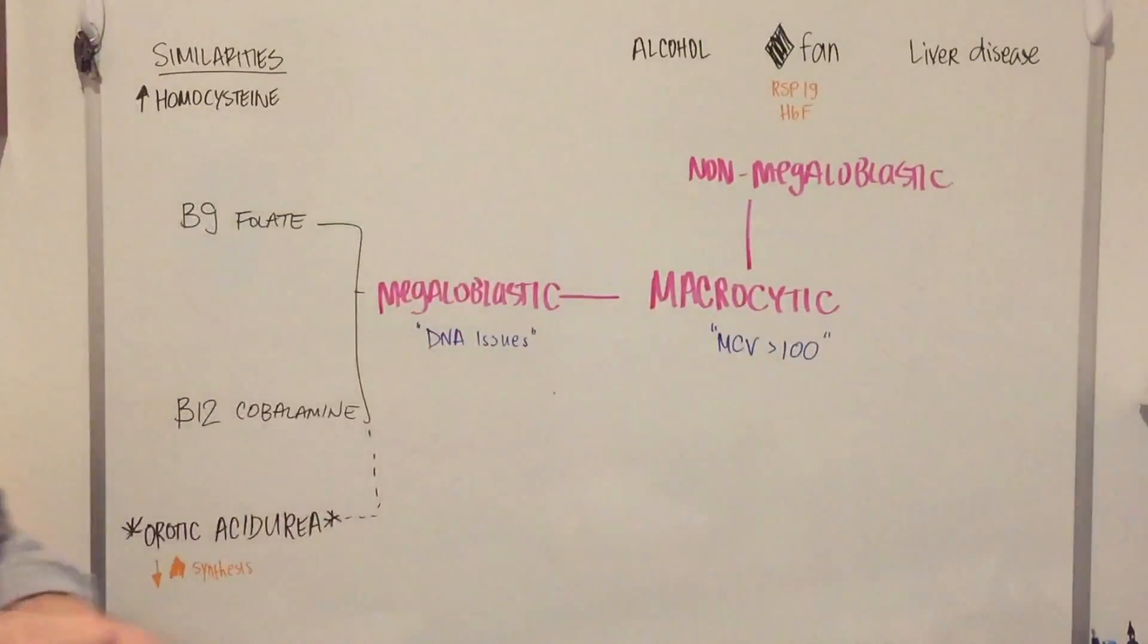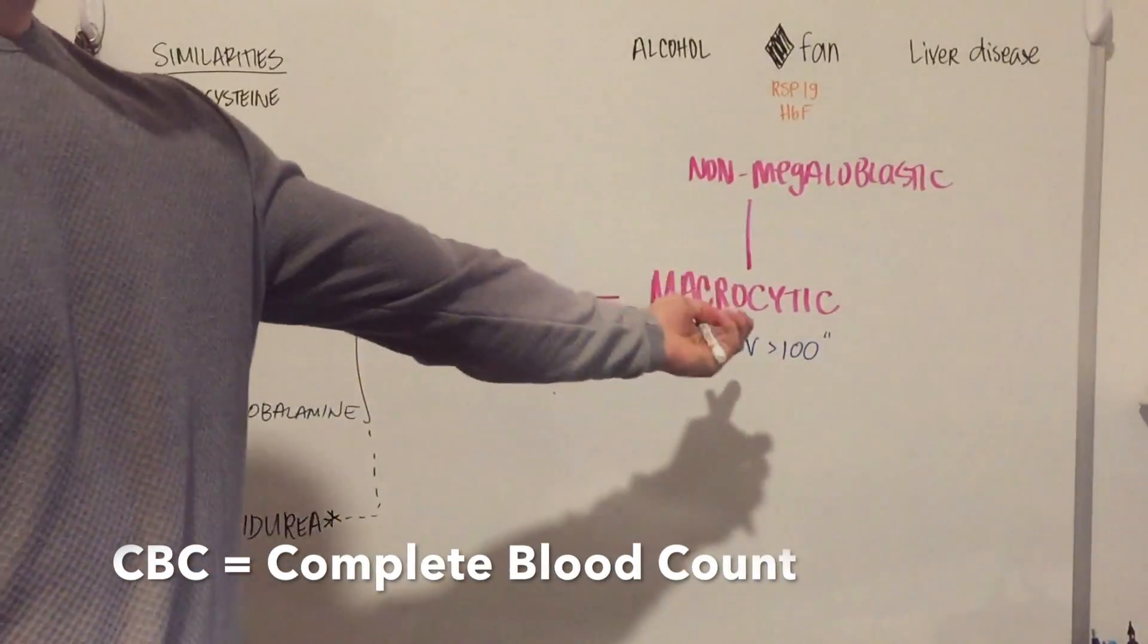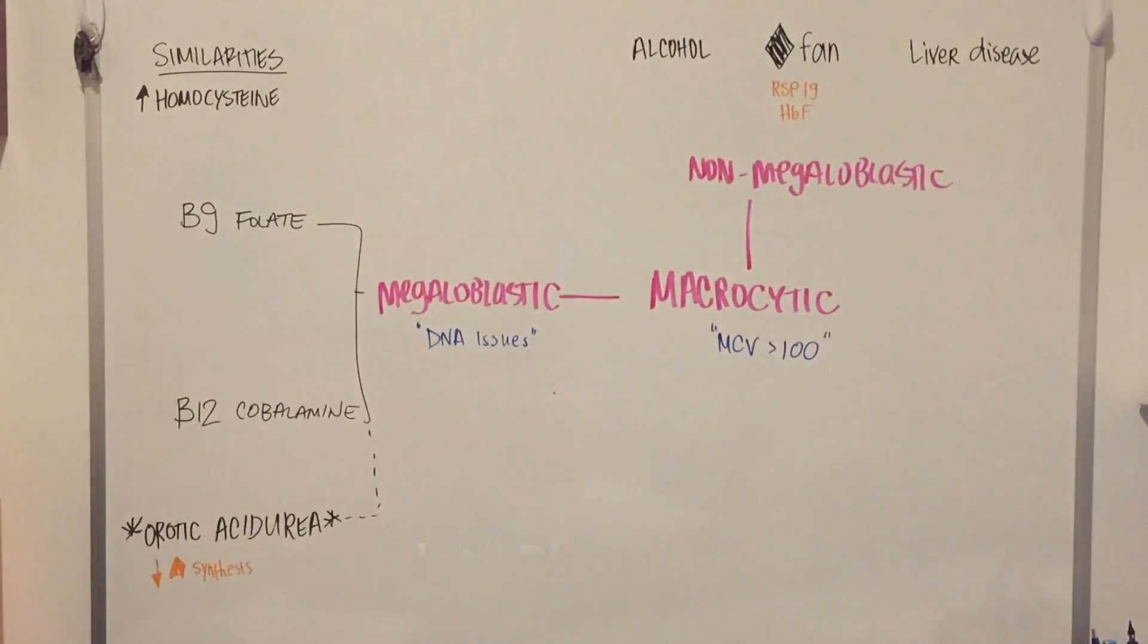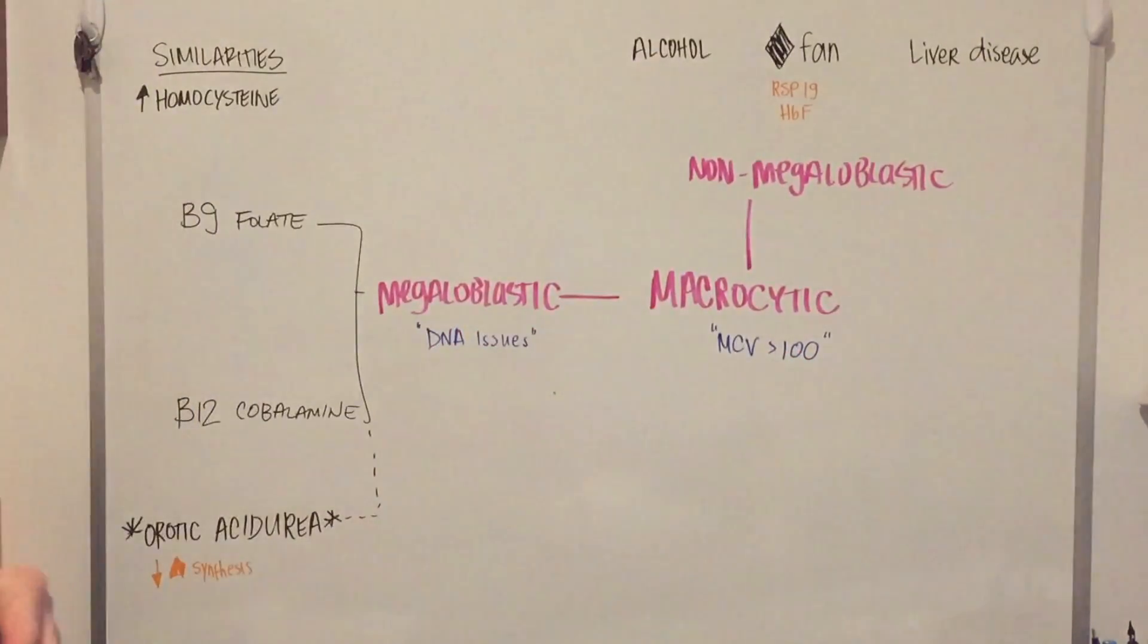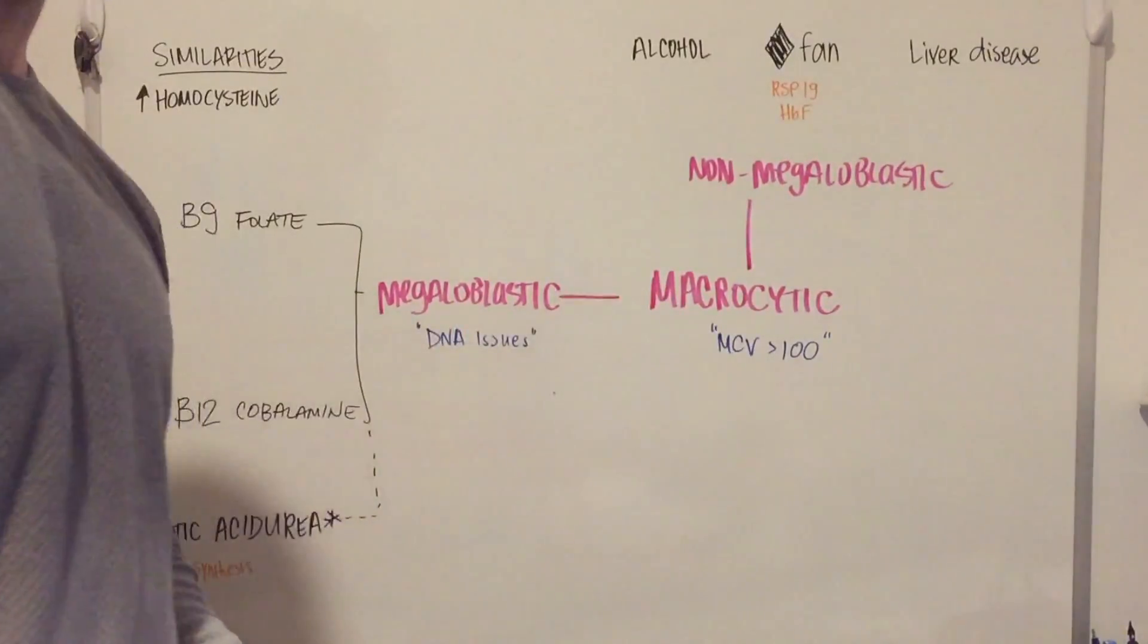But right now we're going to be heading into macrocytic anemias. So once again, our first identifier is going to be on your CBC, and you're going to be looking at the mean corpuscular volume, how big the red blood cell is. If it is above 100 or around 100, you're in macrocytic territory.